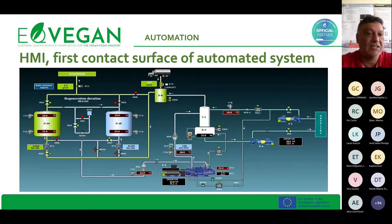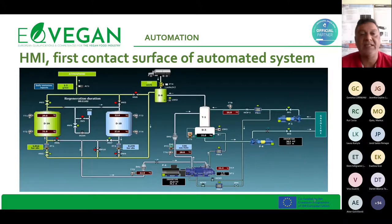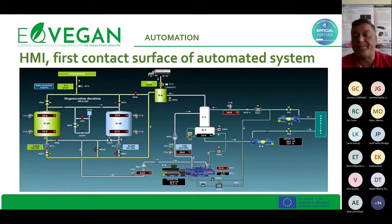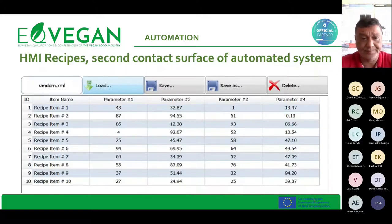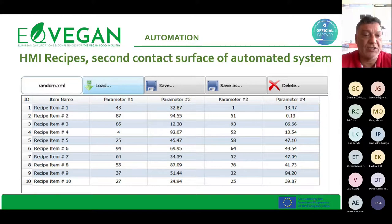As we can see in this image, this is the first contact with the automation system. The human interaction between the machines and everything — to make the control of all the processes and guarantee that everything is working well — is the first contact for the typical operator. Also, another contact is when they have to change the recipe and then change the parameters of each item to develop some activity in the company.